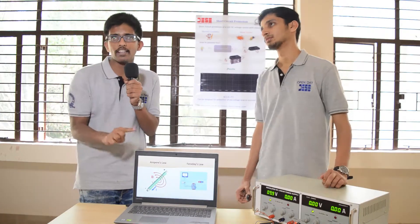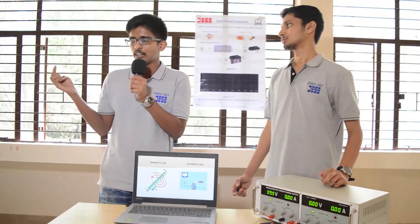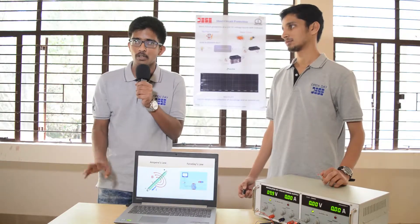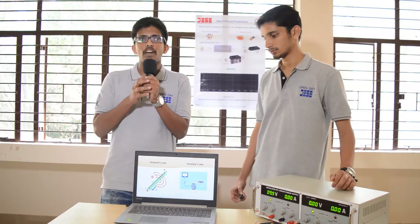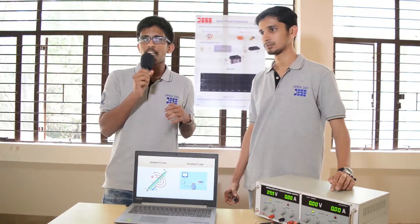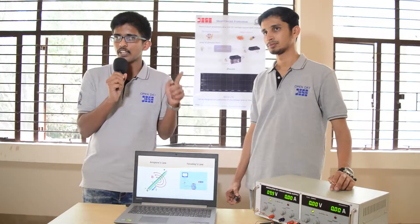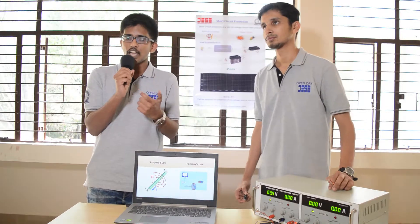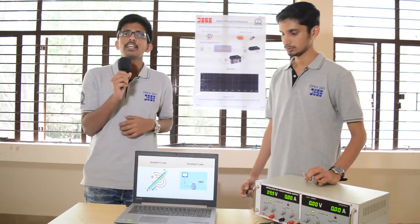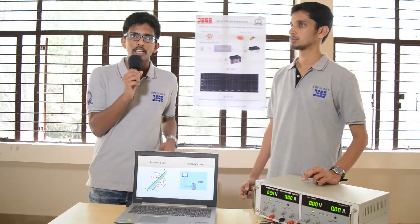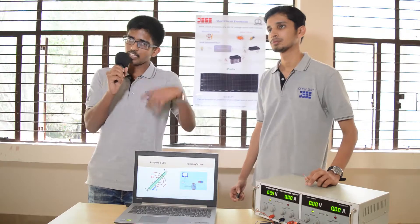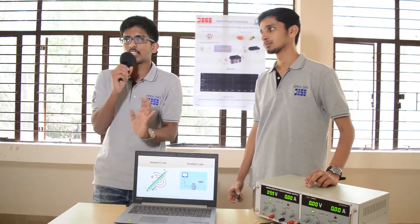One is Ampere's law and the other is Faraday's law. Ampere's law states that when there is a current flowing through a circuit, a magnetic field is created across it. And Faraday's law states that when there is a changing magnetic field through a coil, an EMF is induced in the nearby coil through the principle of mutual induction.